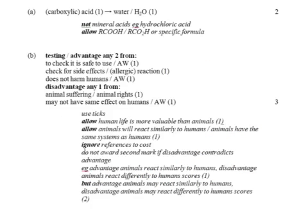On the mark scheme, the word equation answer is organic acid — that's pretty much the same as carboxylic acid — plus water. The reason for testing: I wrote to check that it's safe to use, or to make sure it doesn't harm humans — that was absolutely fine. For an advantage: animals will react similarly to humans, or animals have the same systems as humans. As a disadvantage: animal suffering, animal rights, or not having the same effect on them. There are other possibilities given in the mark scheme.